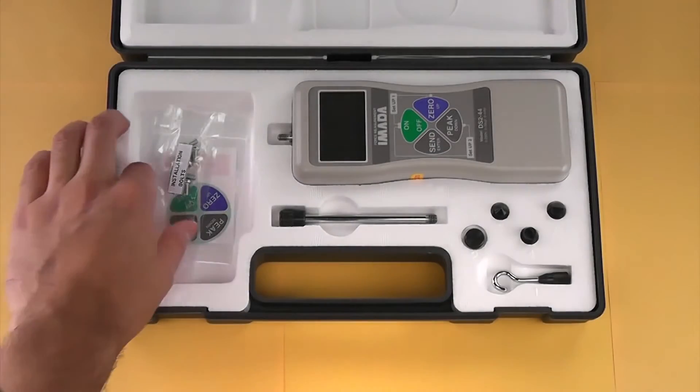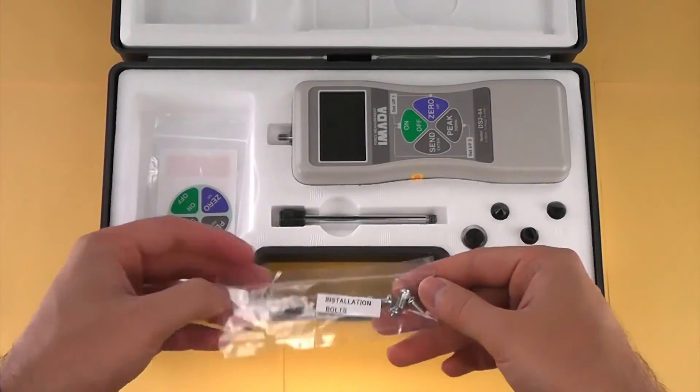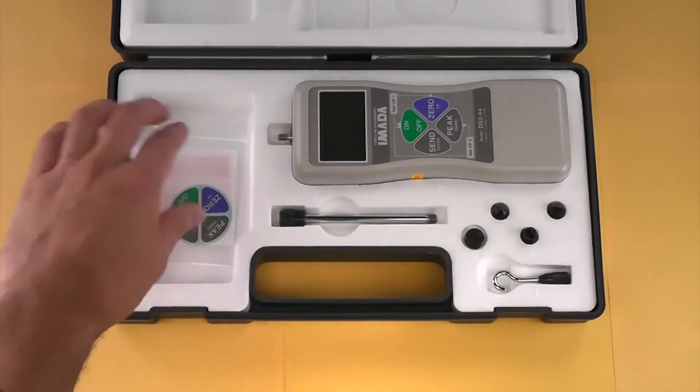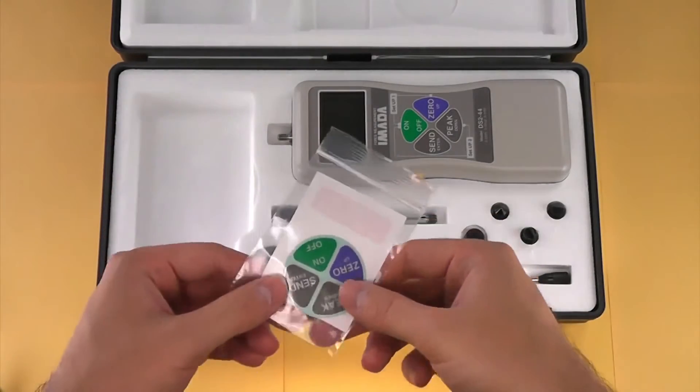The installation bolts for the gauge enable the gauge to be mounted to a test stand. This is the reverse display sticker.